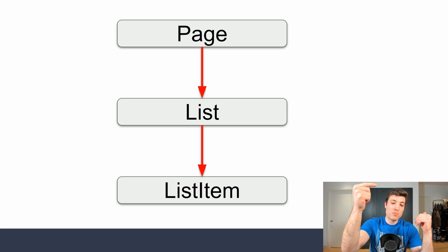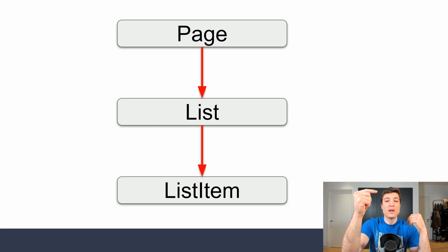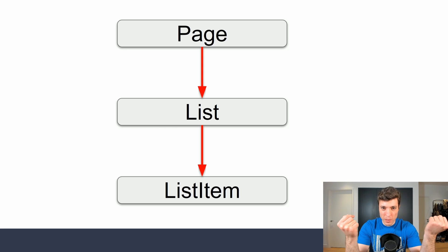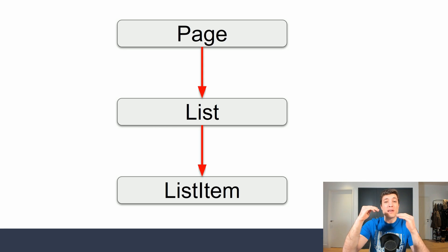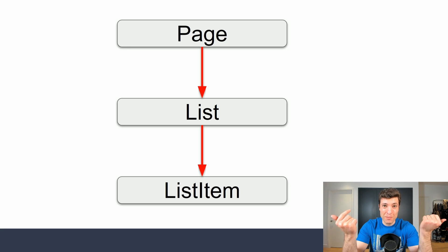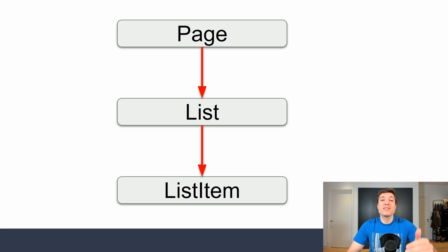Why don't I advise starting on page and going down to list item? Because if you start on page, you are still consuming components that aren't TypeScript or don't have types yet, so migration will be painful. But if you start from list item and go up, every level you move up you start to see the benefits of having types. It's up to you which way to go, but today we are starting from list item and going up.